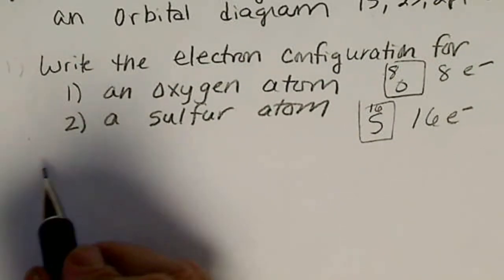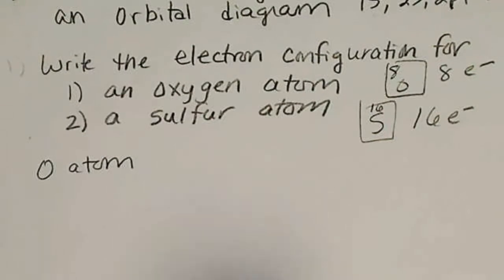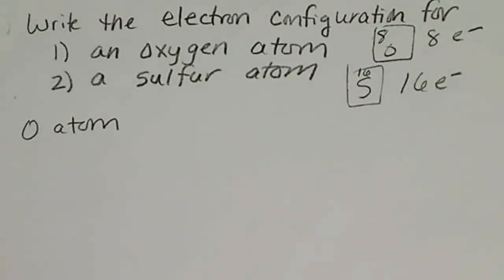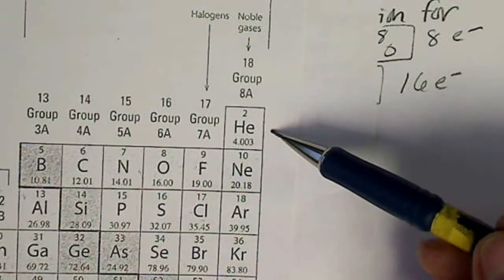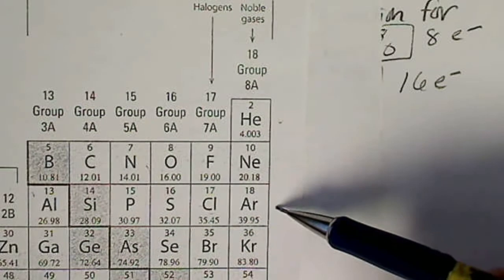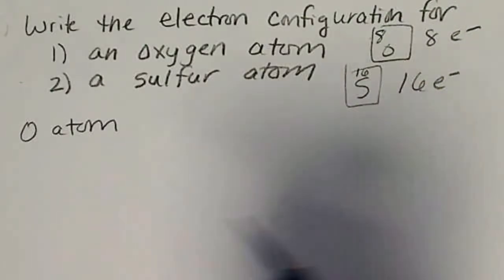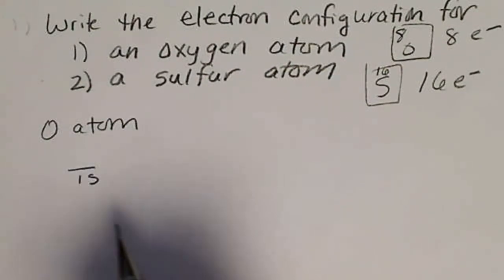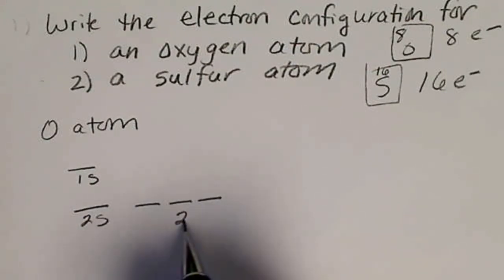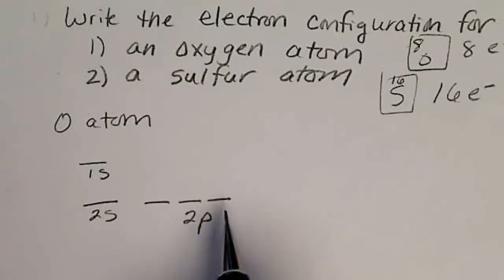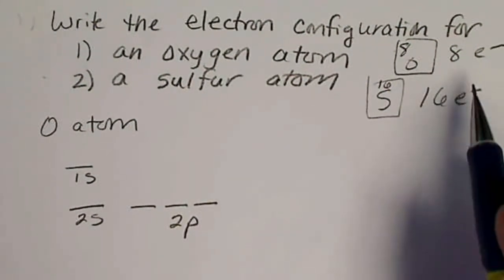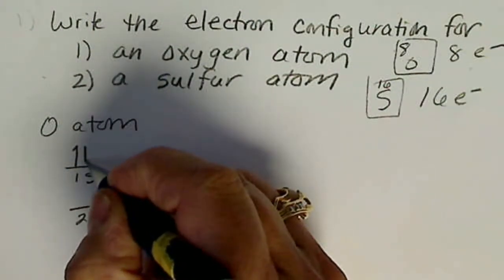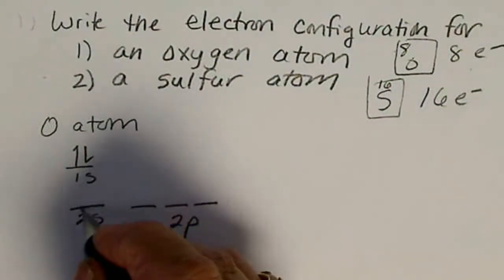For an oxygen atom, oxygen is on the second row of the periodic table (n equals 2). We'll put the 1s orbital, then 2s orbital, then 2p. There are 3 orbitals within that p subshell. Oxygen has 8 electrons, so we'll put those in order: 1, 2, 3, 4.